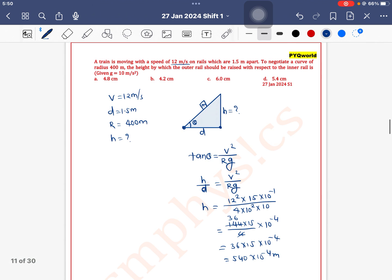So 540 times 10 to the power minus 4 is 5.4 times 10 to the power minus 2 meters, which is 5.4 centimeters. Option D is the correct one. Thank you.